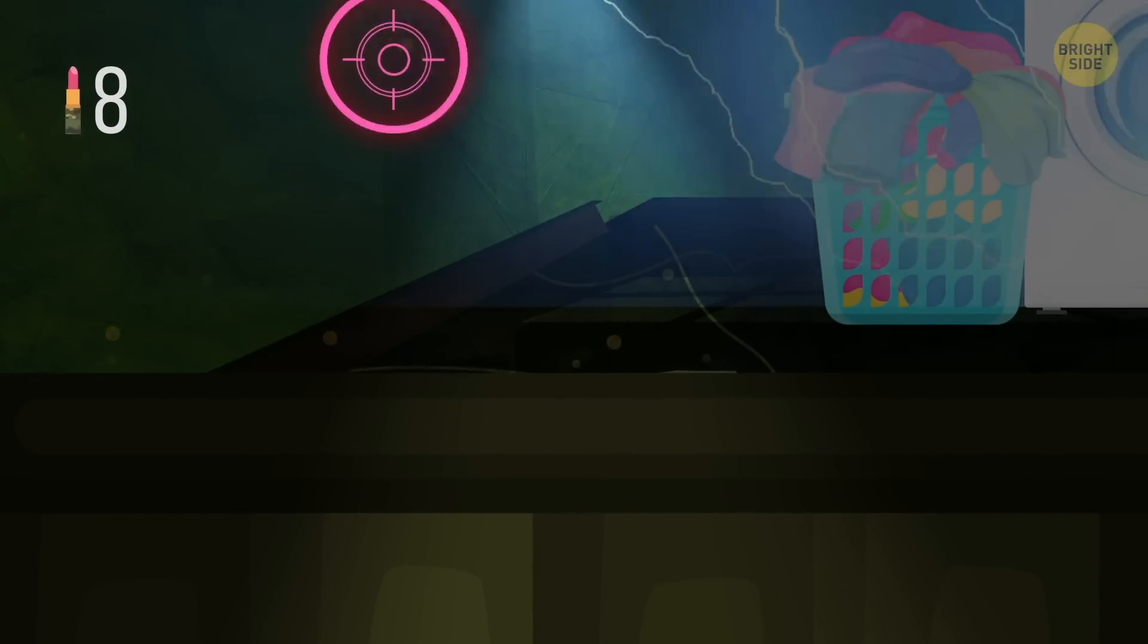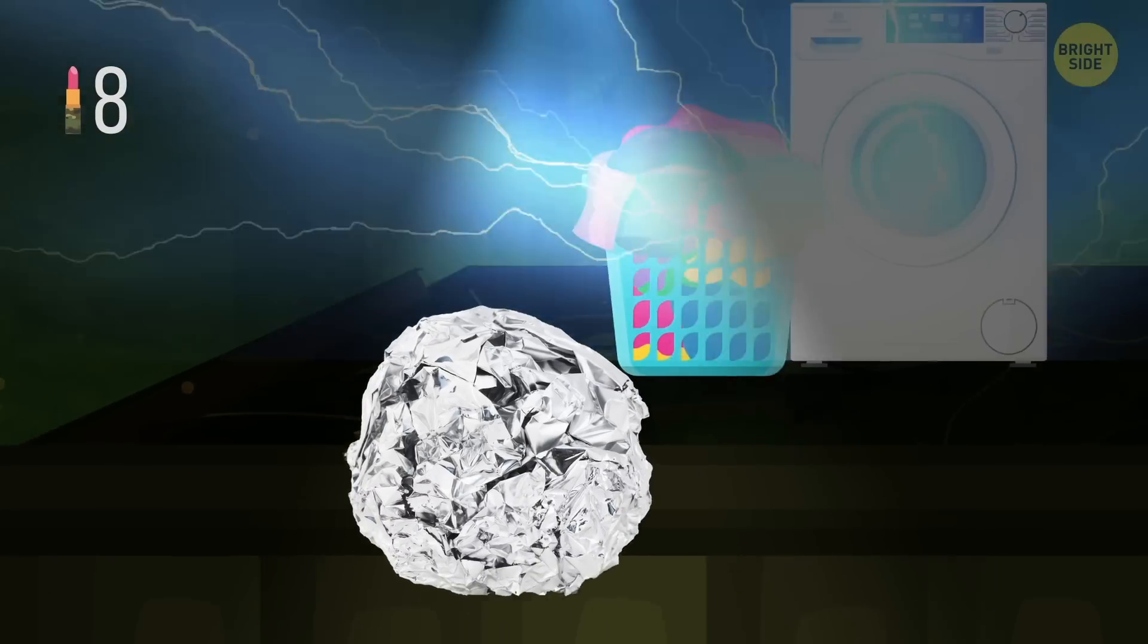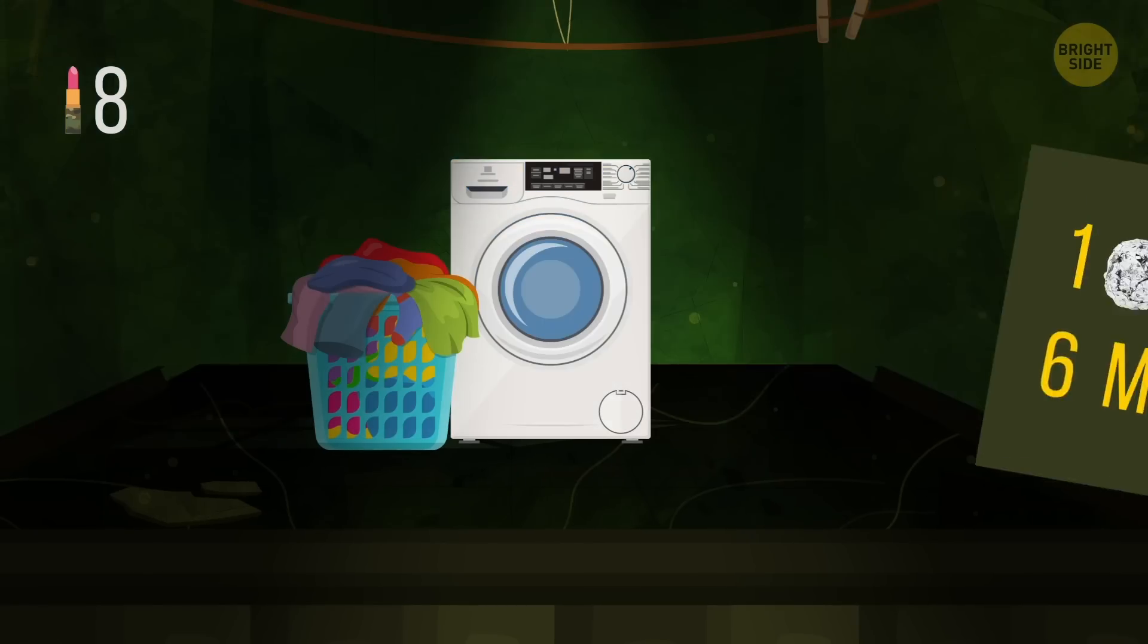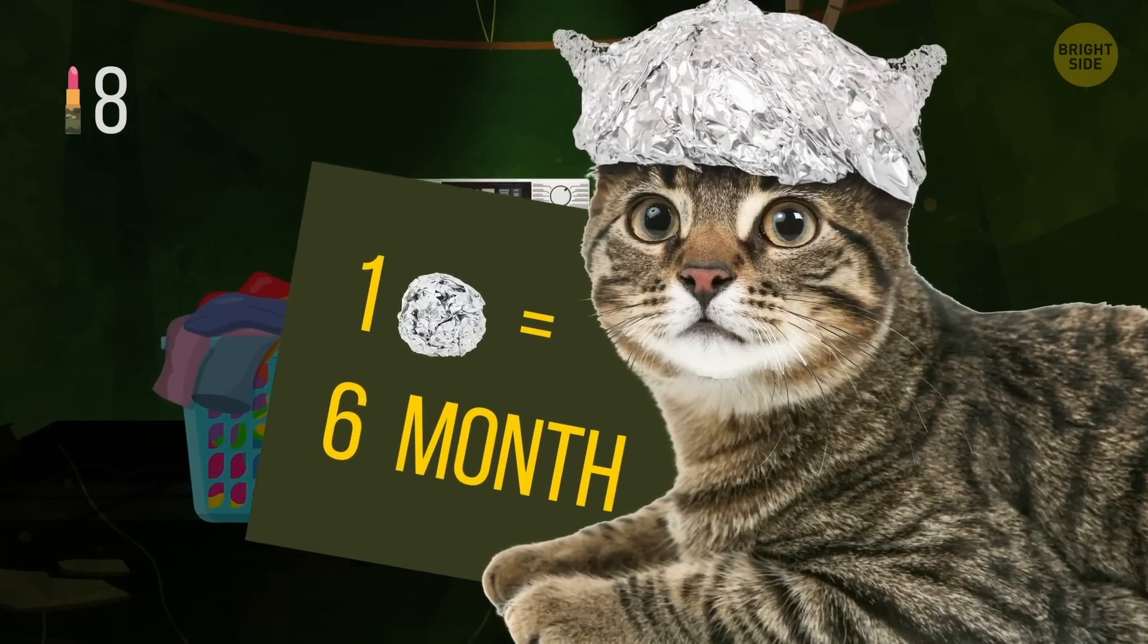Use balls made of aluminum foil to fight static buildup in the dryer. One aluminum ball can serve you for about half a year before you have to switch to a new one.